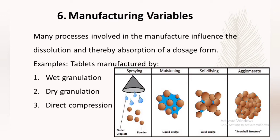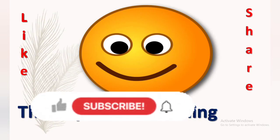The last factor is manufacturing variables. Many processes involved in manufacturing influence dissolution and thereby absorption. For example, tablets manufactured by wet granulation use wet binders to aggregate small dry particles into harder granules, resulting in longer disintegration and dissolution times, which affects absorption. In contrast, direct compression does not require binders, allowing faster disintegration and dissolution, resulting in more rapid absorption into systemic circulation.